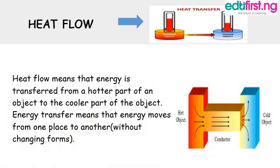Heat flow means that energy moves from one place to another without changing forms. The process of heat flow from the sun to us is referred to as radiation, and the process of heat flow from a soup to a spoon is referred to as conduction. Heat flow means energy is transferred from a hotter part of an object to a cooler part.